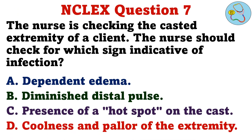Question 7. The nurse is checking the casted extremity of a client. The nurse should check for which sign indicative of infection? A. Dependent edema. B. Diminished distal pulse. C. Presence of a hot spot on the cast. D. Coolness and pallor of the extremity.